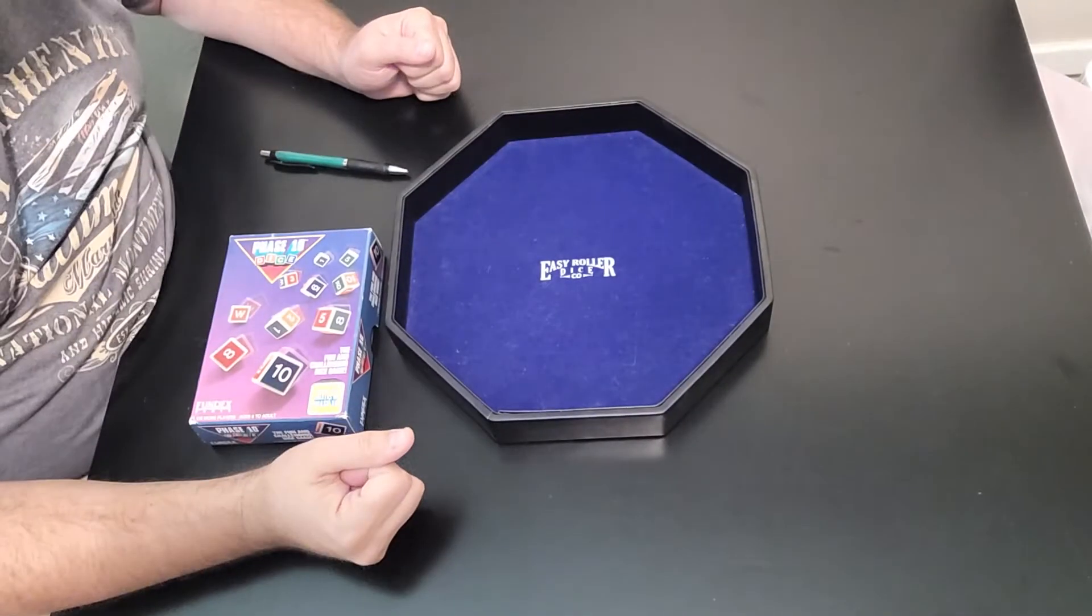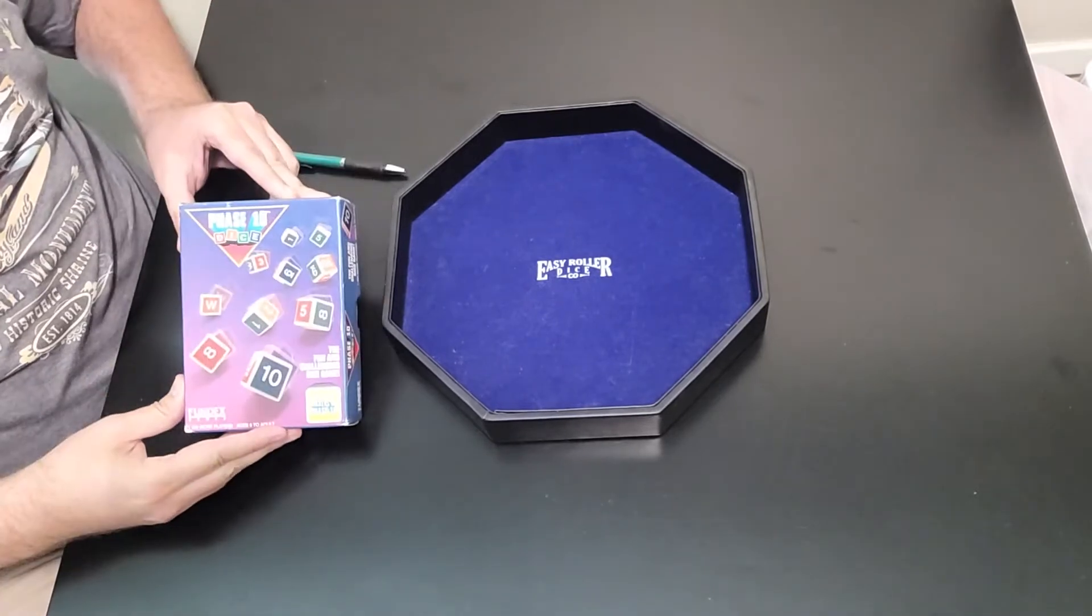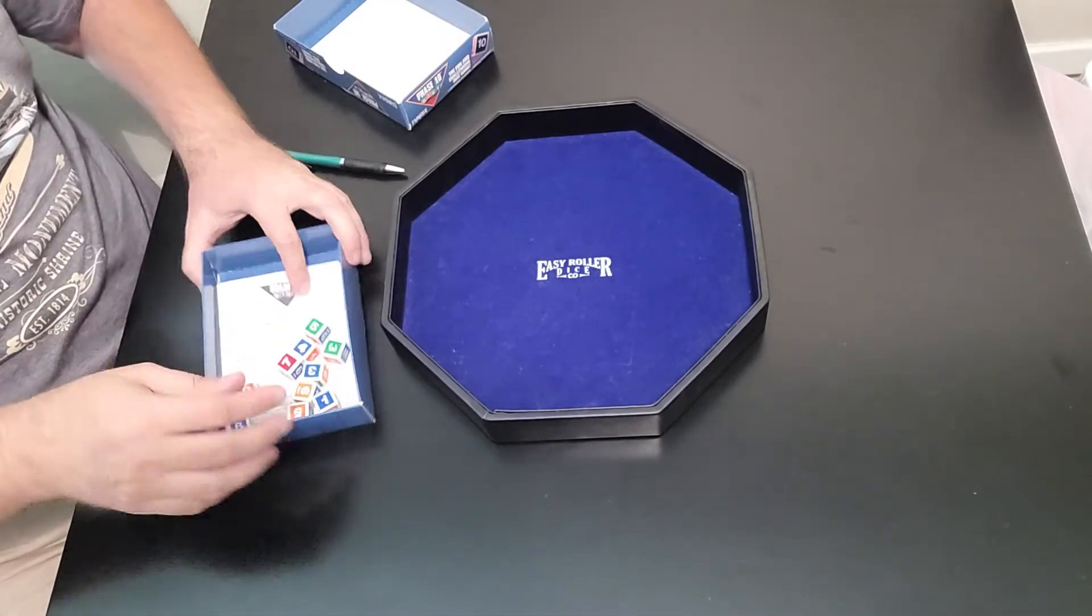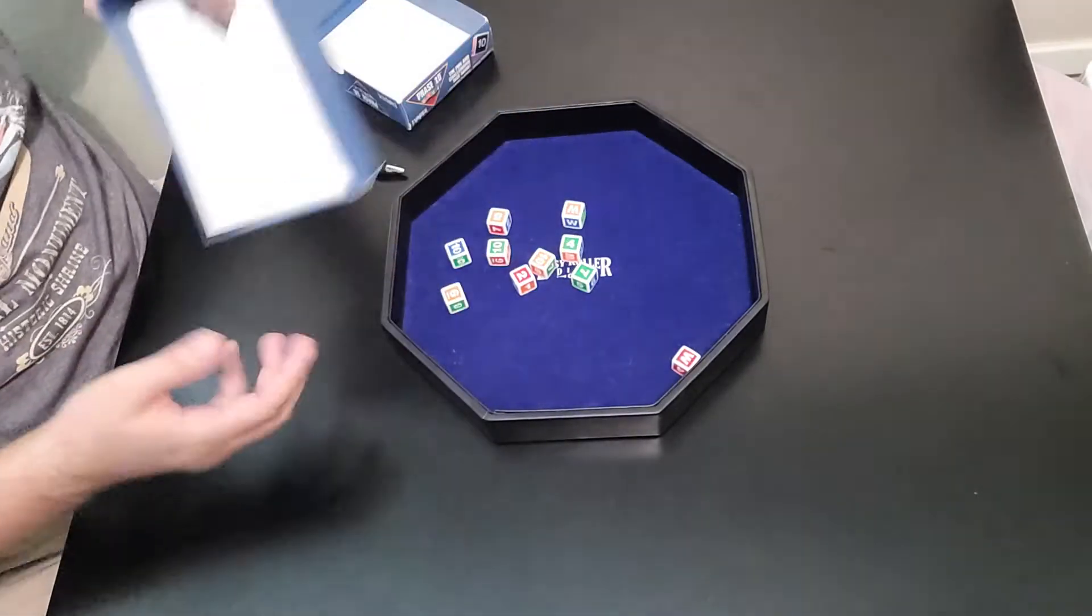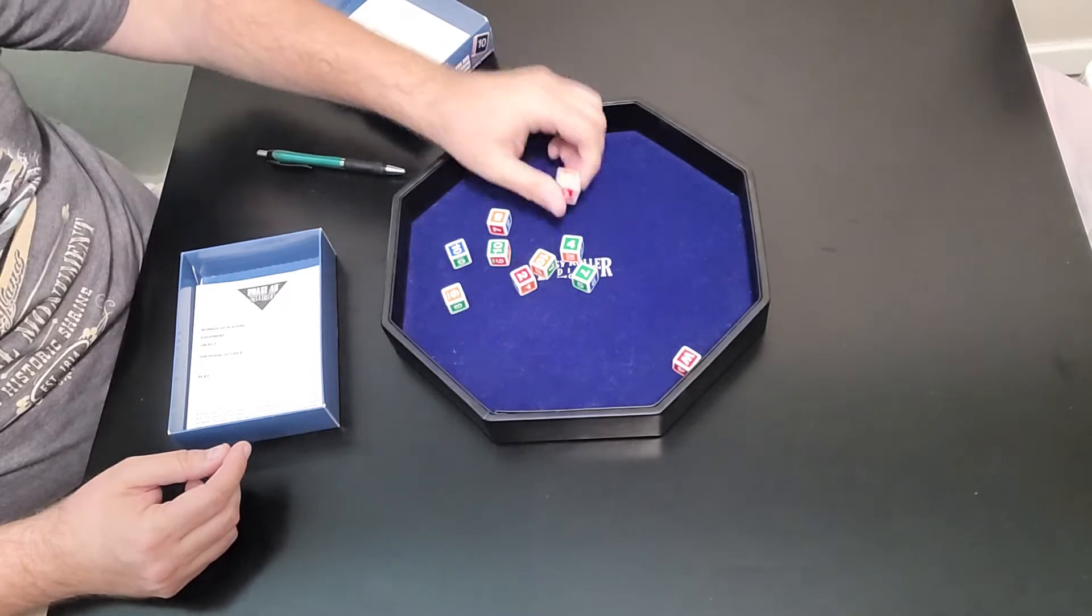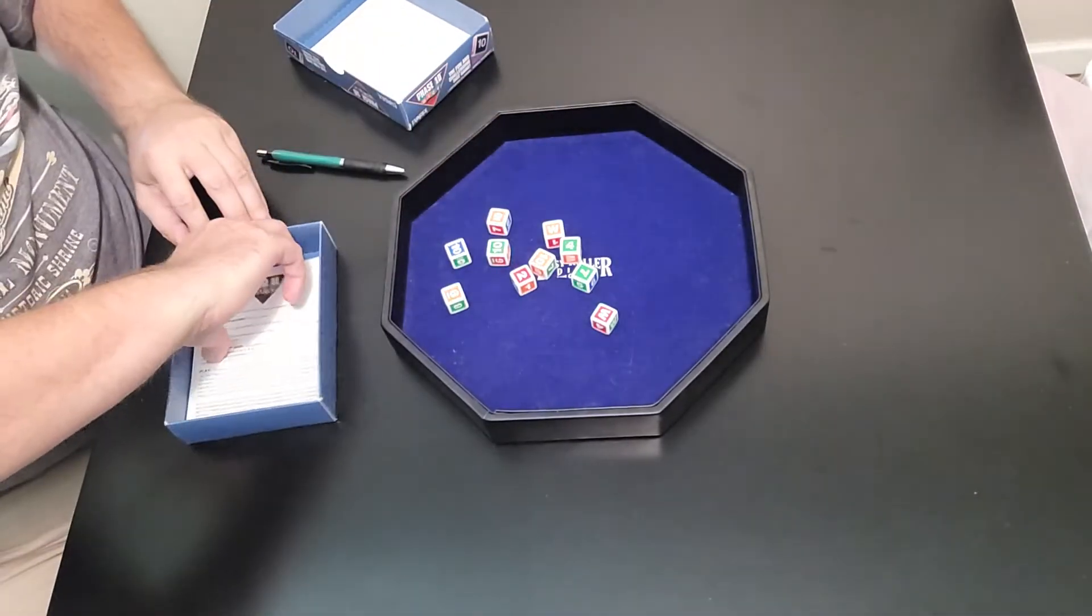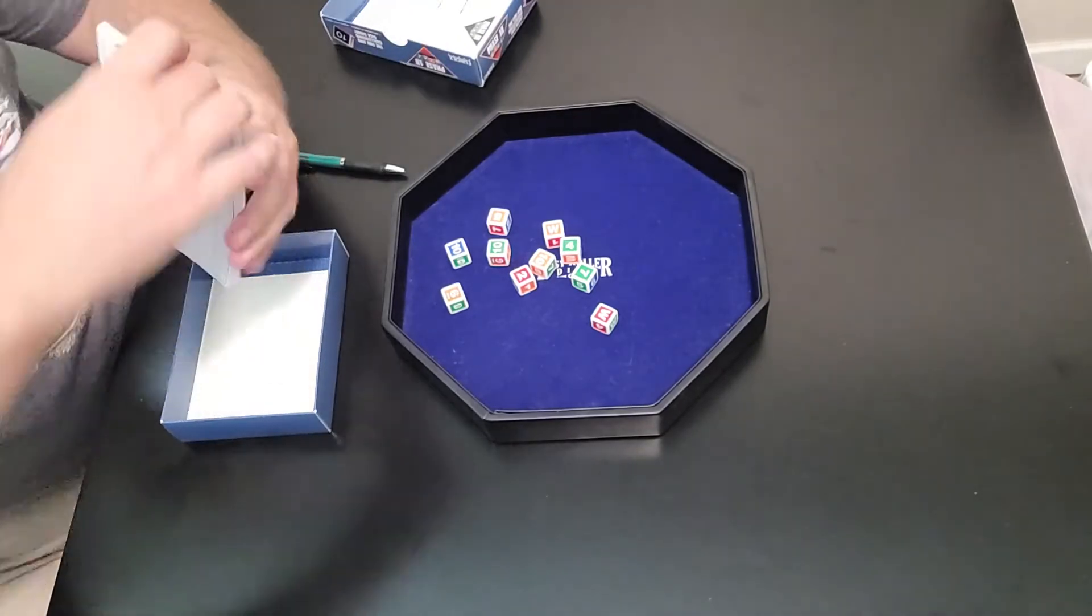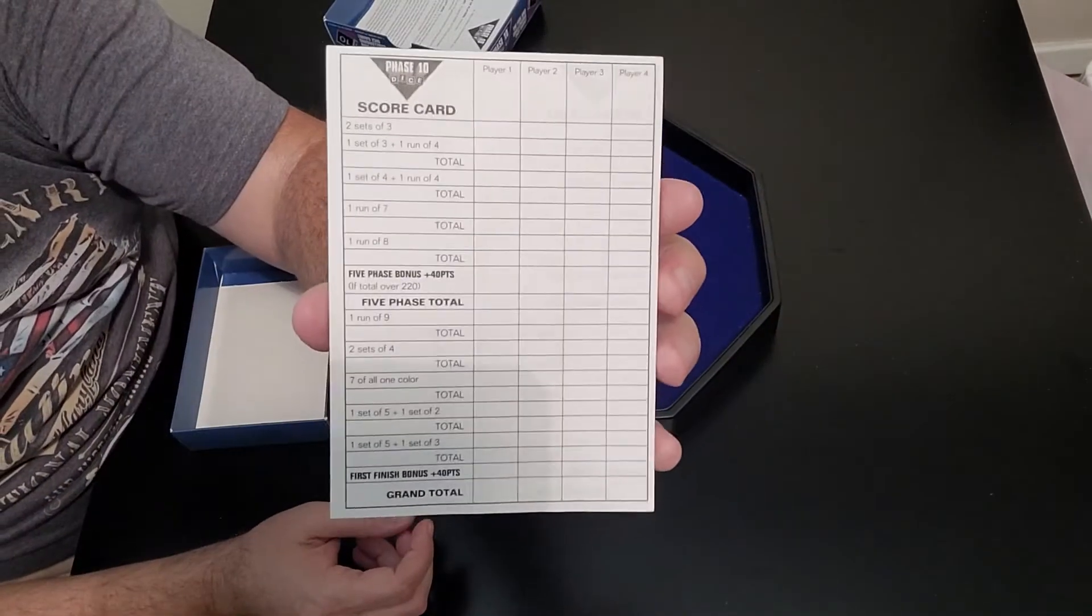Alright everybody, here we are at the gaming table. Let me go ahead and show you Phase 10 dice here. What you're going to do is you're going to open it up and you're going to have 10 dice. Here they are. And they also have a W, which means the wilds, so they have wilds on the dice as well. You have the instruction booklet, that's right here. And then you also have the scoring pad, which looks just like this.